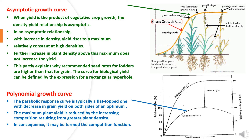The third type of growth curve is the polynomial growth curve, also known as the parabolic growth curve. The parabolic response curve is typically a flat-topped one with a decrease in grain yield on both sides of an optimum. The maximum plant yield is reduced by increasing competition resulting from greater plant density. In consequence, it may be termed a competition function.